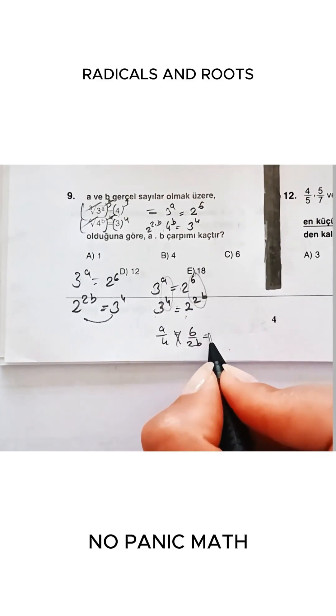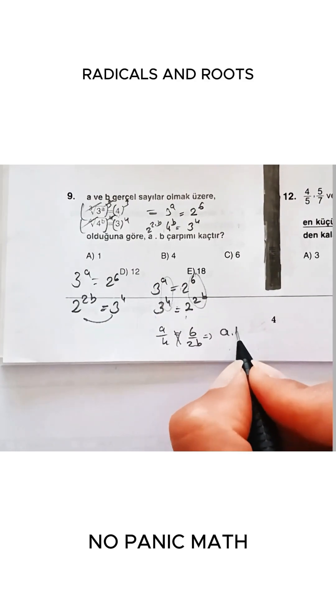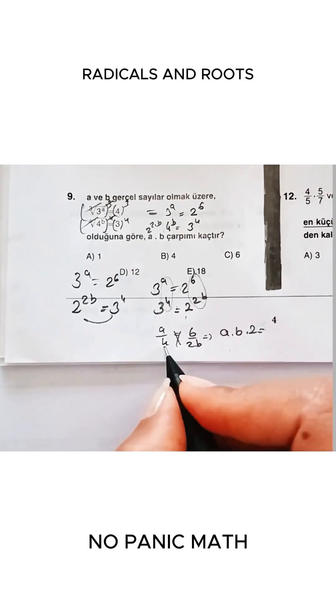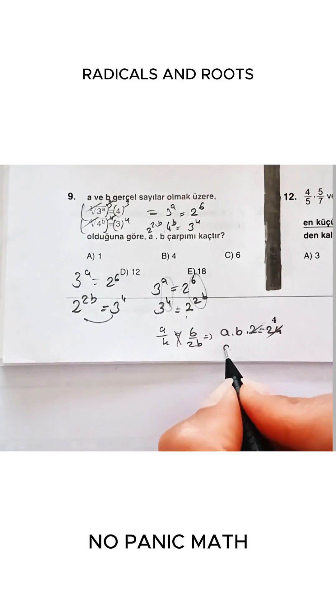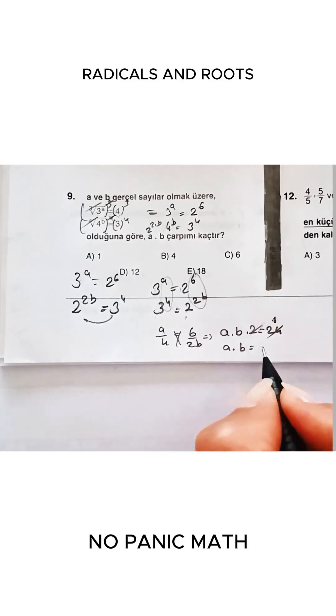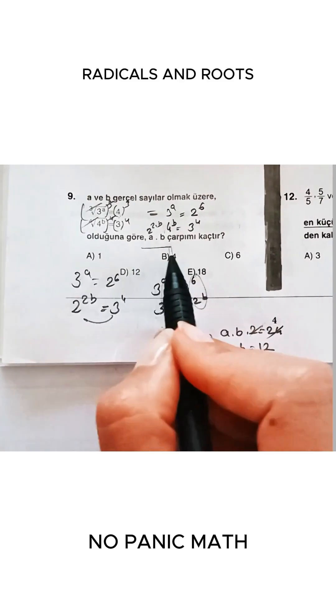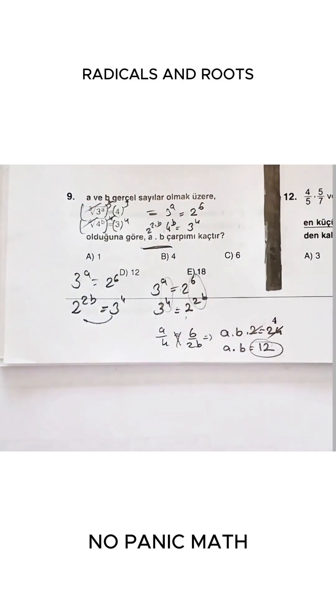Friends, if I cross-multiply like this, a times b times two equals six times four, which is 24. I can simplify the two in 24. The value of a times b will be 12. They already asked for a times b, so our answer is 12.